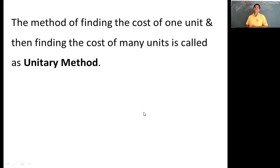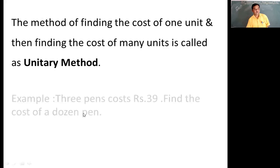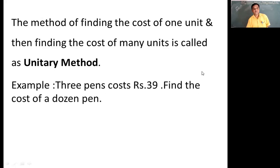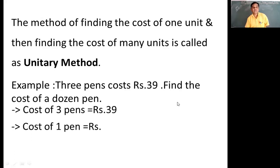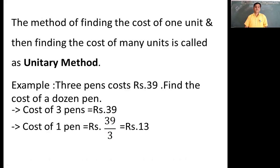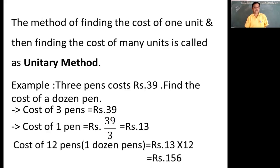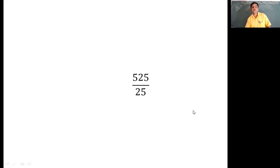So this method of finding the cost of one unit from the cost of many units, and then finding the cost of many units by multiplication, is known as the unitary method. We will see a few examples. 3 pens cost 39 rupees — find the cost of one dozen pens. To find the cost of one pen we divide 39 by 3, and we get 13 rupees. To find the cost of one dozen pens we multiply 13 by 12, giving us 156 rupees as the cost of one dozen pens.